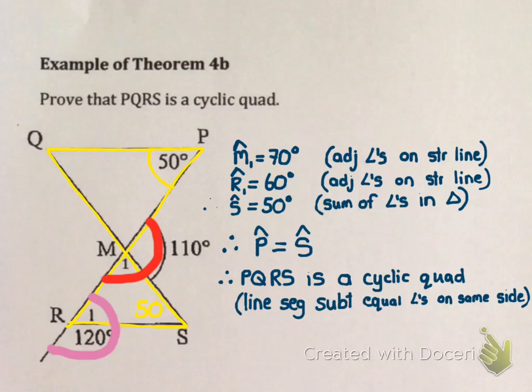So those are Theorems 4a and 4b. As I said, 4a's proof is examinable and these two theorems play a very important role in this section.